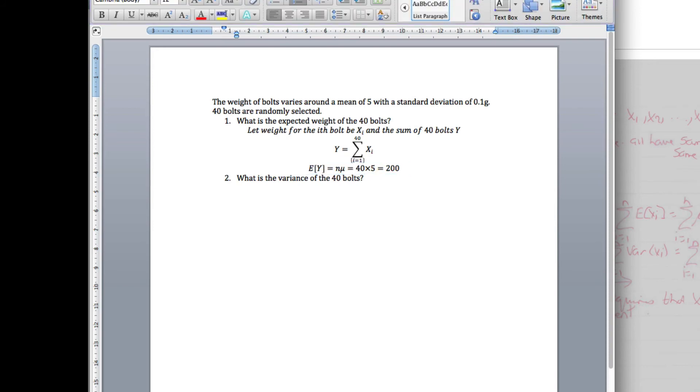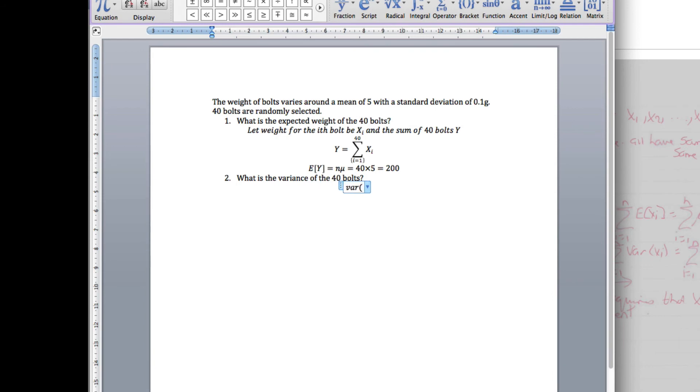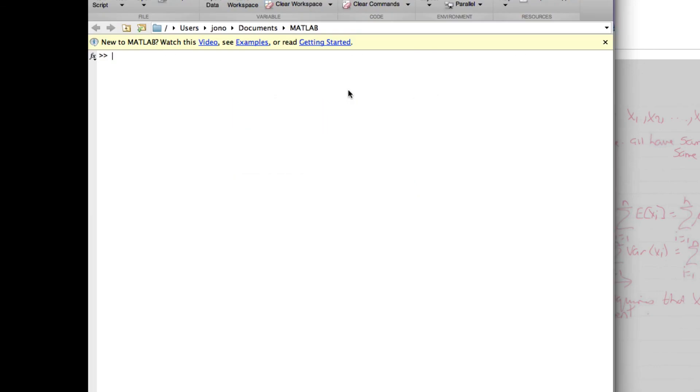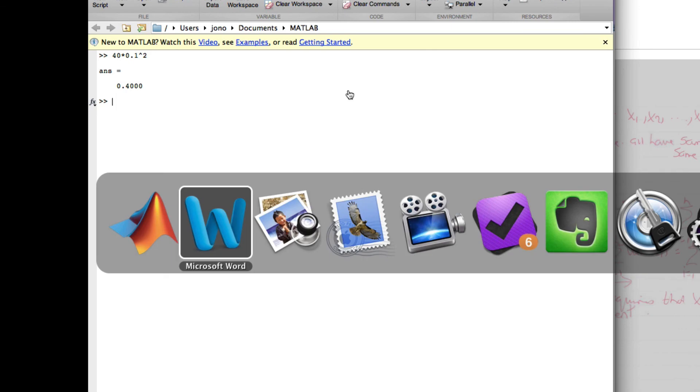And finally, the variance of y is n times sigma squared. We've got 40 times sigma squared, where sigma is 0.1, so that's 40 times 0.1 squared, which is 0.4.